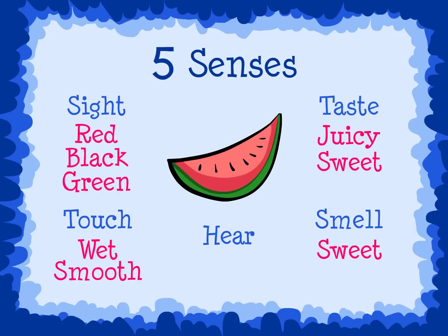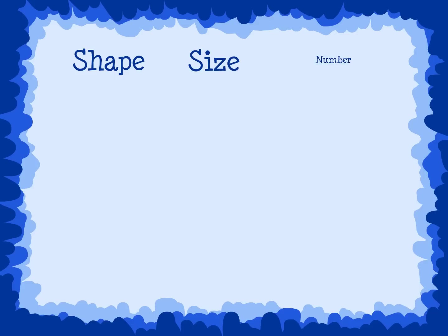And when I use my sense of hearing, I can hear the crunchy watermelon as someone eats it. Using our five senses is an excellent way to help us think of different adjectives to make our writing more interesting. Another way to use adjectives is to describe the shape, size, or number of the noun or nouns.